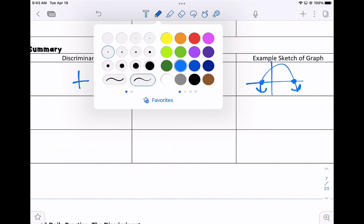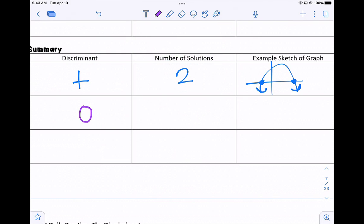When your discriminant is 0, there's one solution, and your graph might look like this where it touches your graph once.